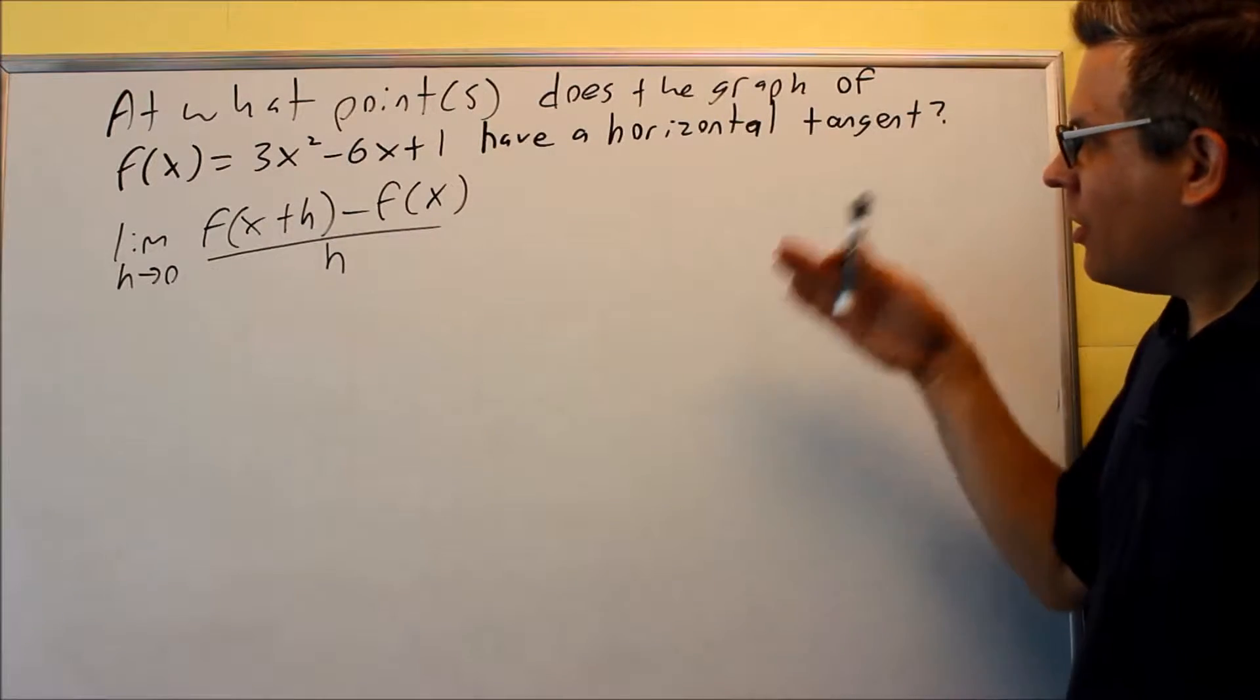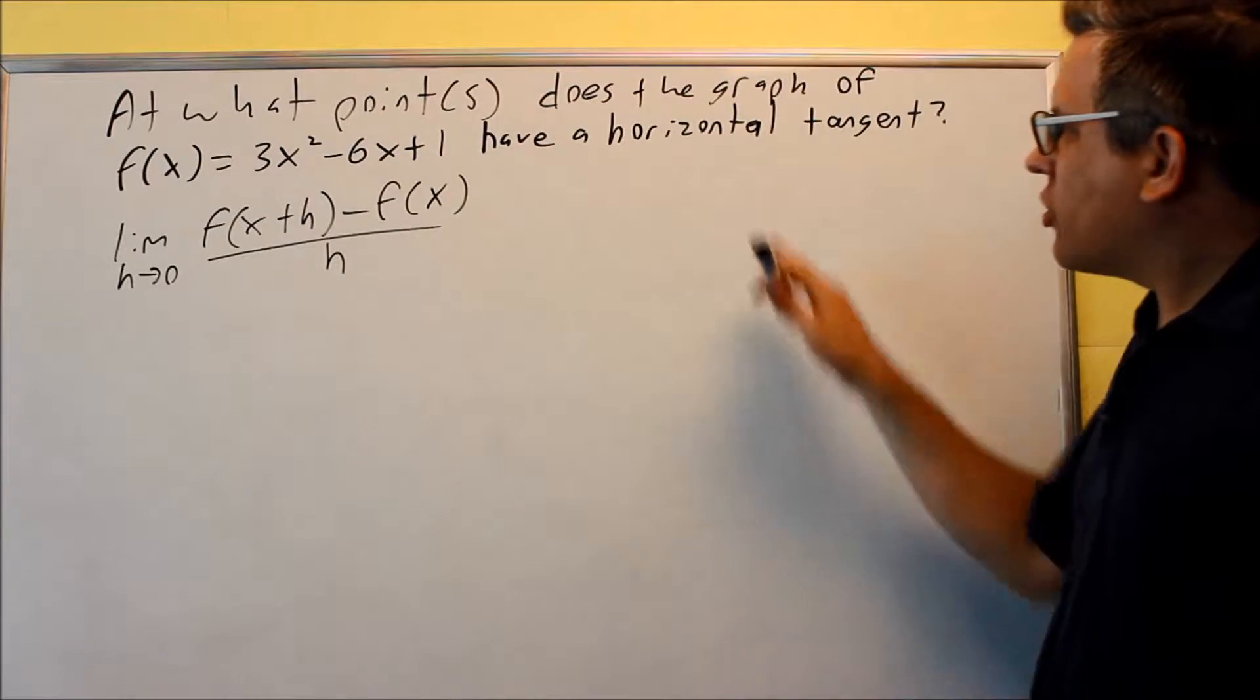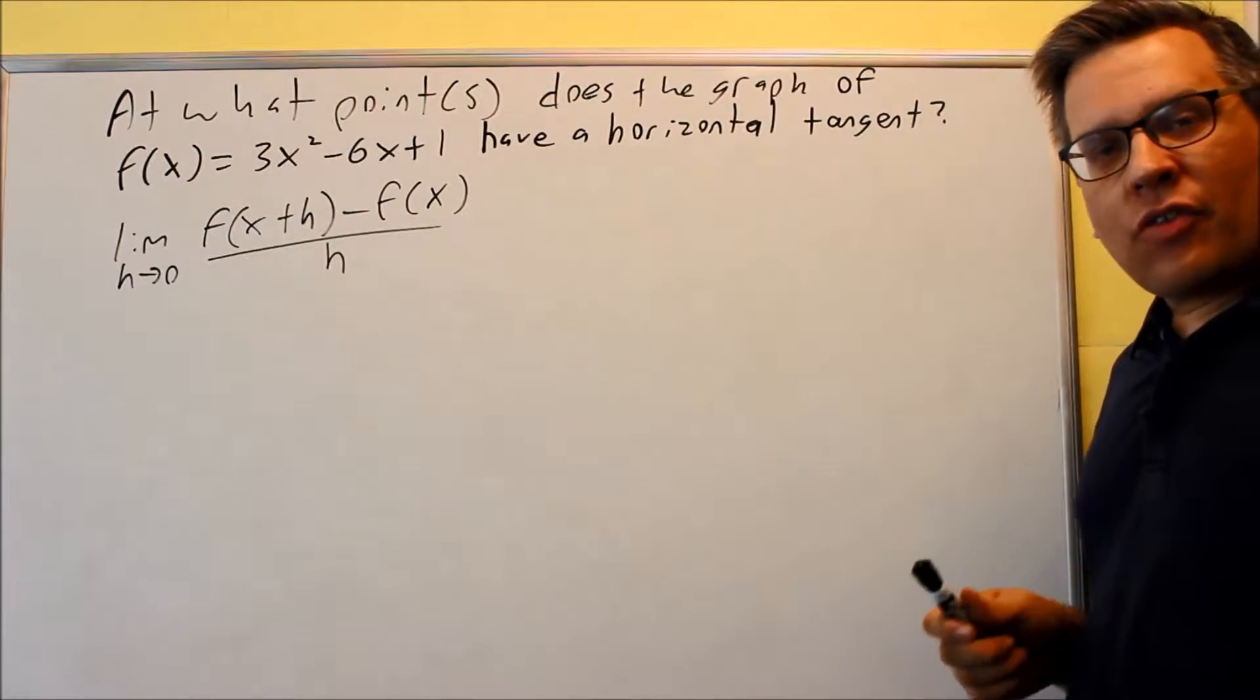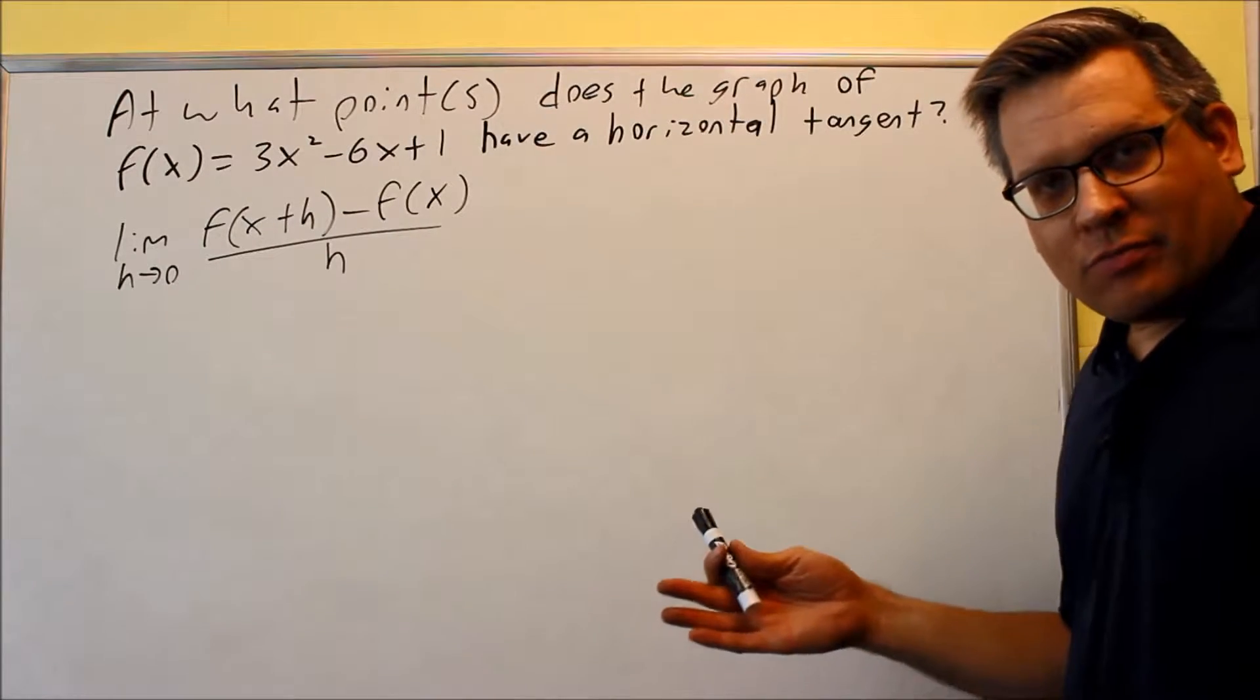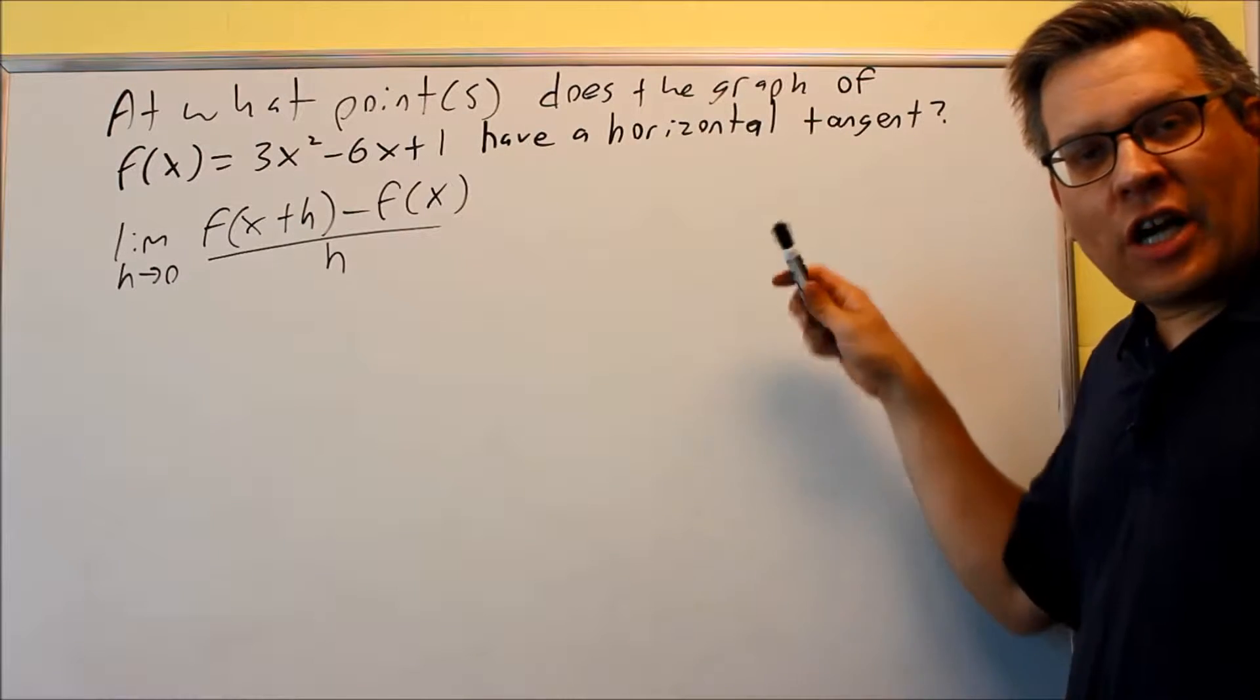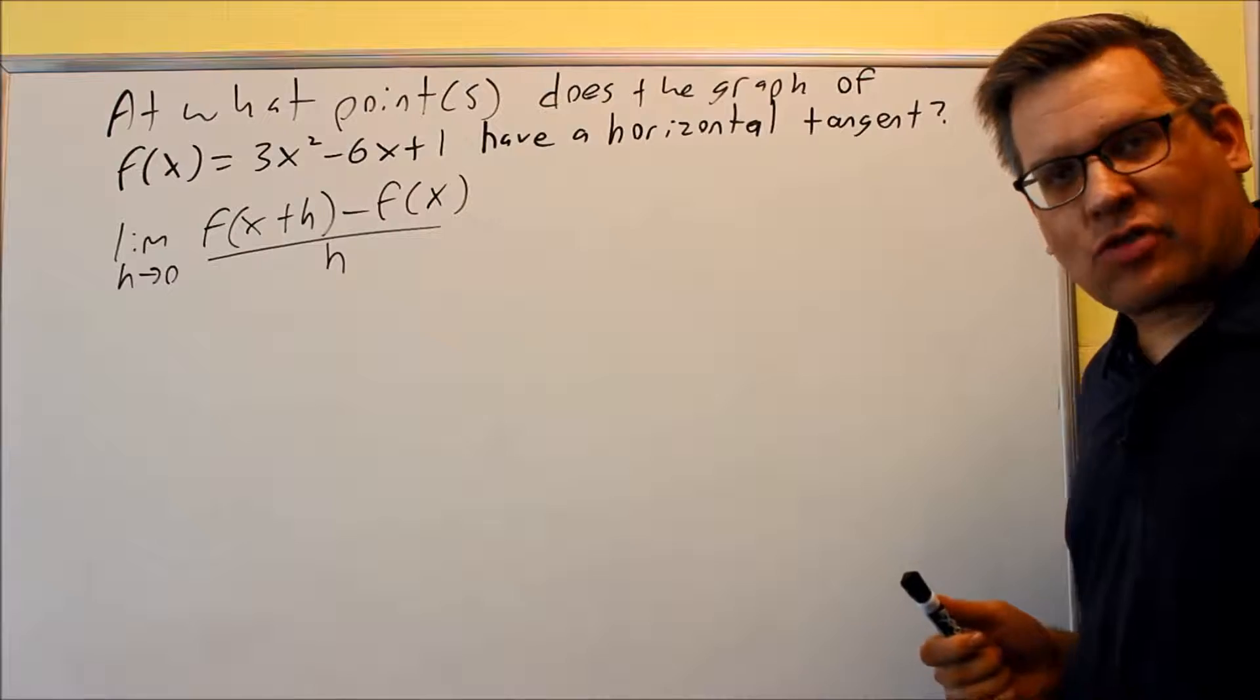This problem wants us to find the point or points at which the equation f(x) = 3x² - 6x + 1 has a horizontal tangent. To do that, we have to first find the derivative, and then set the derivative equal to zero. What is a horizontal tangent? That's a tangent line that's horizontal. If I have a line that's horizontal, we know it's going to have a slope of zero.